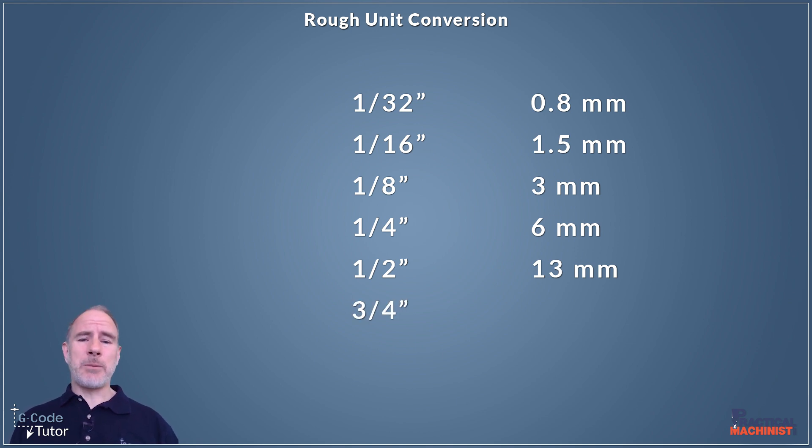Three quarters is the next one. That's 0.75 in imperial, and we can round that down to 19 millimeters, because it's not far off. It's only 50 microns different, or two thousandths of an inch.